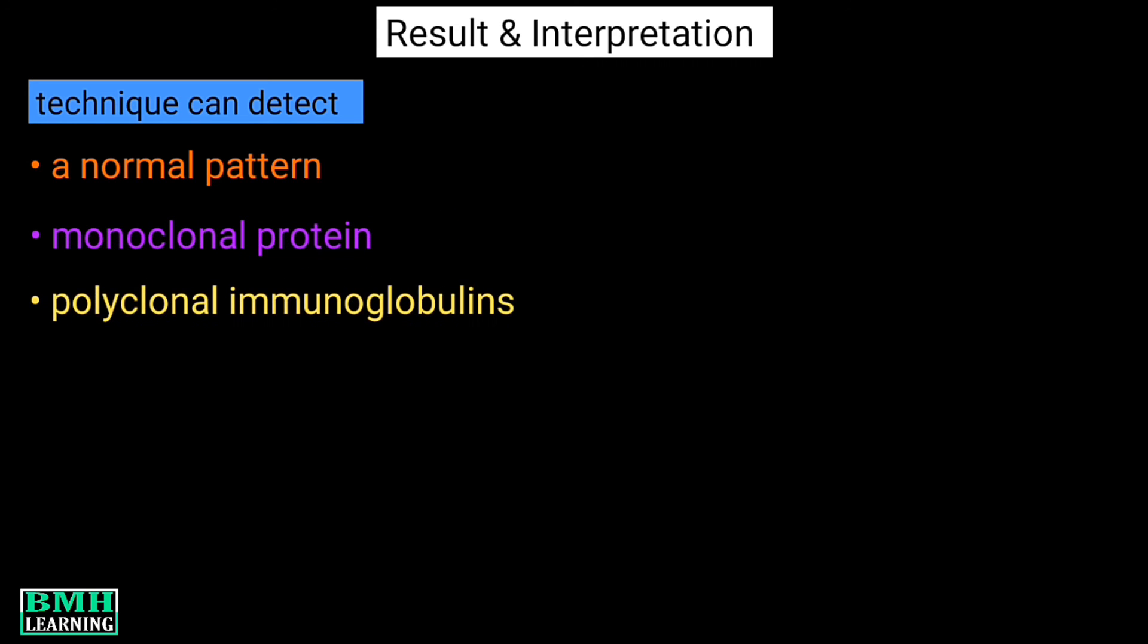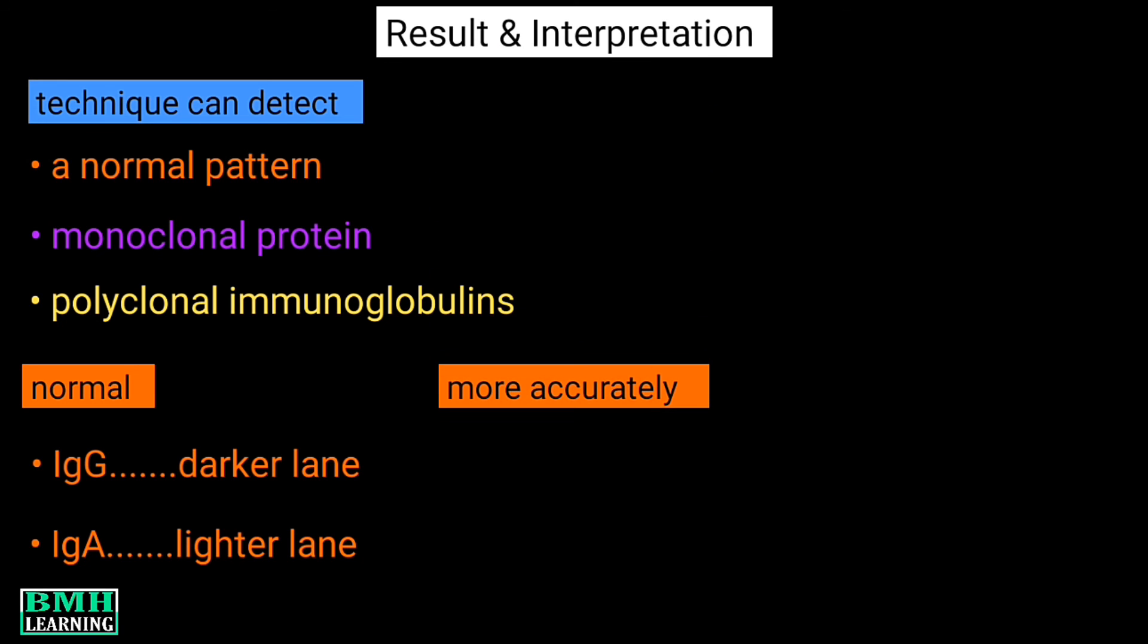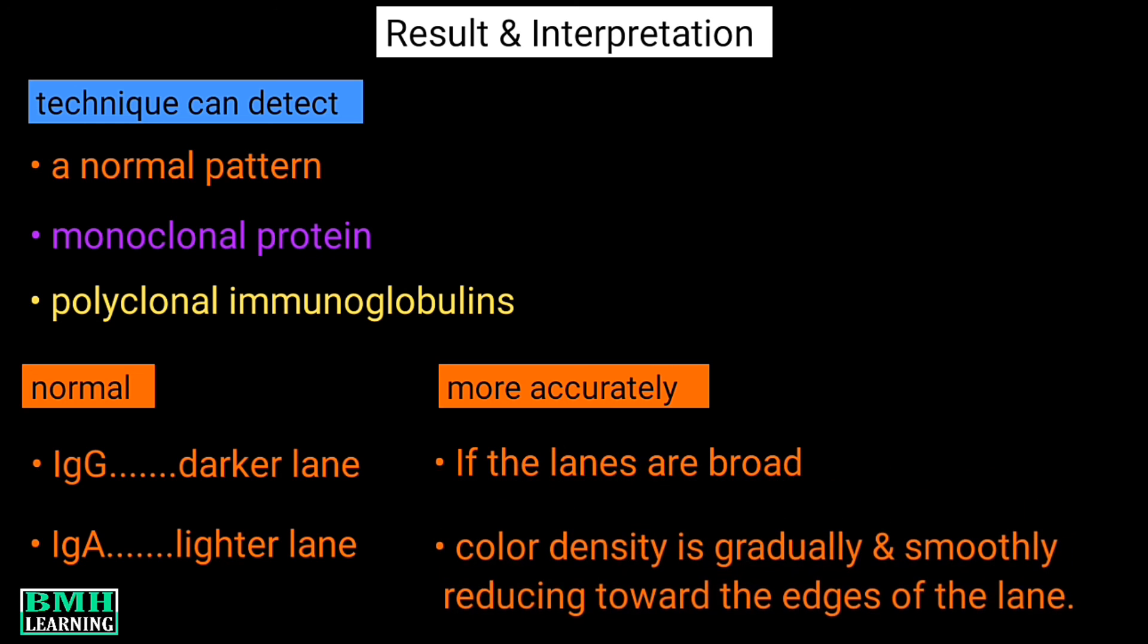Talking about the normal results, it includes immunoglobulin G which shows a darker lane, and immunoglobulin A, the lane would be lighter. To identify the patterns more accurately in a normal result, you must observe that the lanes are broad. In addition to this, the color density is gradually and smoothly reducing towards the edges of the lane.